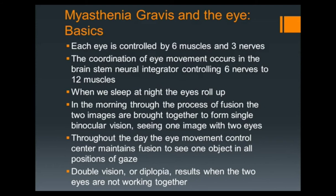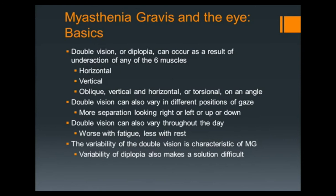Throughout the day, eye movement control maintains fusion to see one object, and double vision or diplopia results when the two eyes aren't lined up. It can occur as a result of underaction of any of the muscles, and that's one of the problems with myasthenia. I've had patients with horizontal, vertical, oblique, and torsional diplopia — and it's variable: it's only bad when I blink. Double vision also varies in positions of gaze and throughout the day because of fatigue, and this variability is characteristic of myasthenia, which makes it extremely difficult to treat with constant treatment.